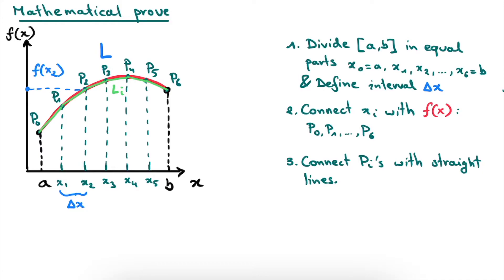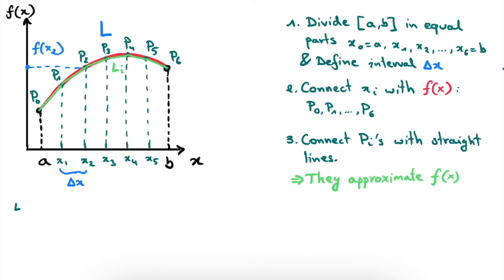With the intuitive idea from earlier in mind, when these straight lines are connected to each other they approximate f of x. Therefore, the arc length between a and b of f of x is approximated by the sum of all the li's. There is only one step left: to calculate the length of each straight line li. To do this, let's take l2 as an example between point p1 and p2, and let's magnify that triangle in order to calculate l2.